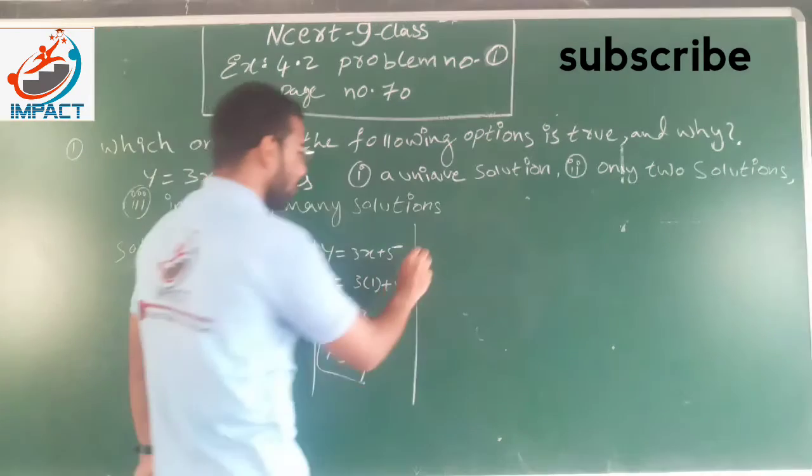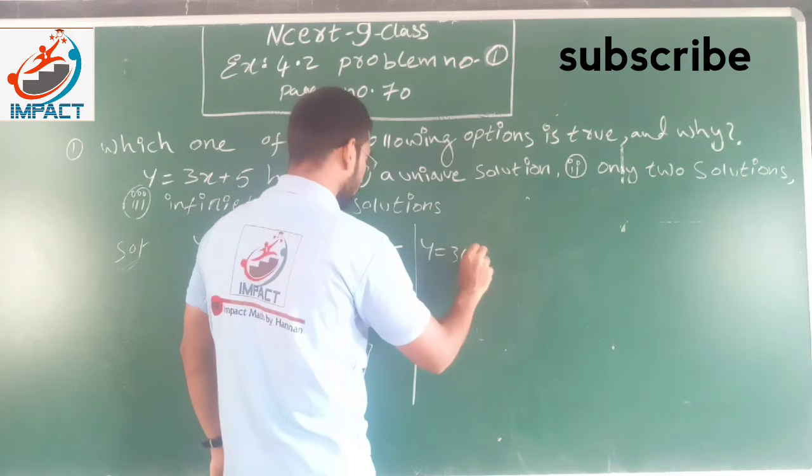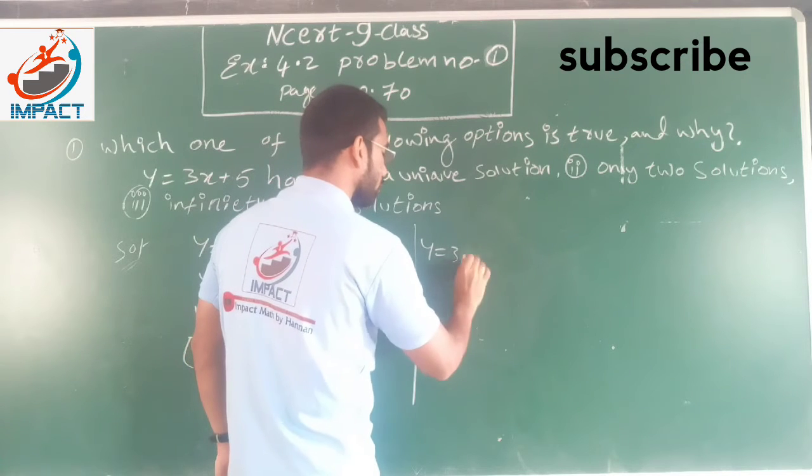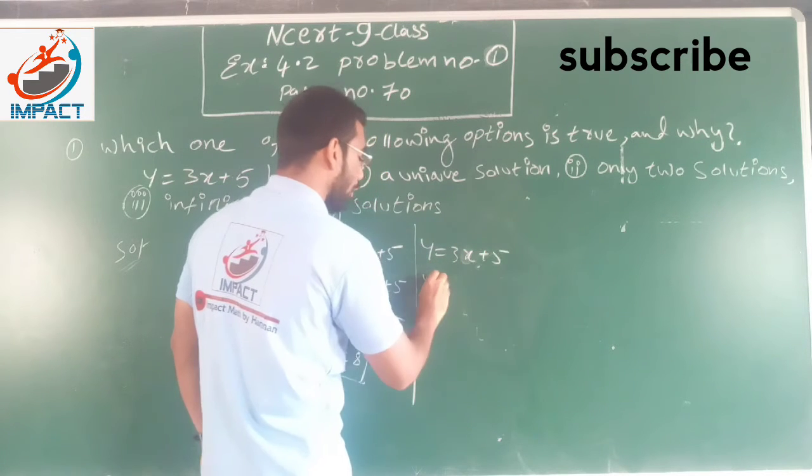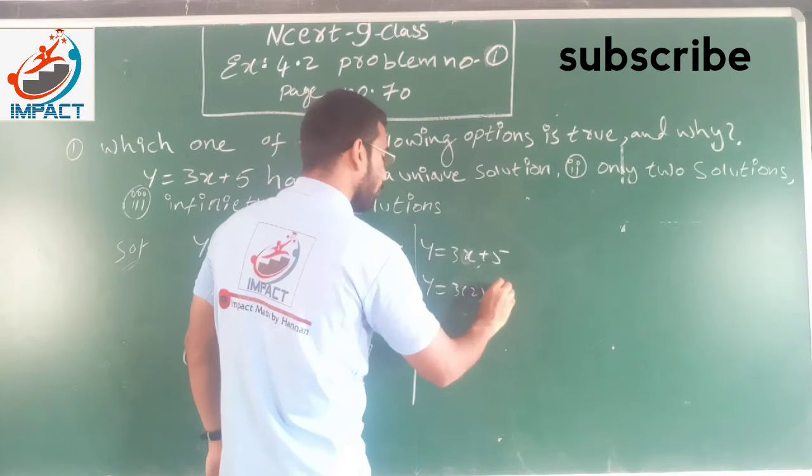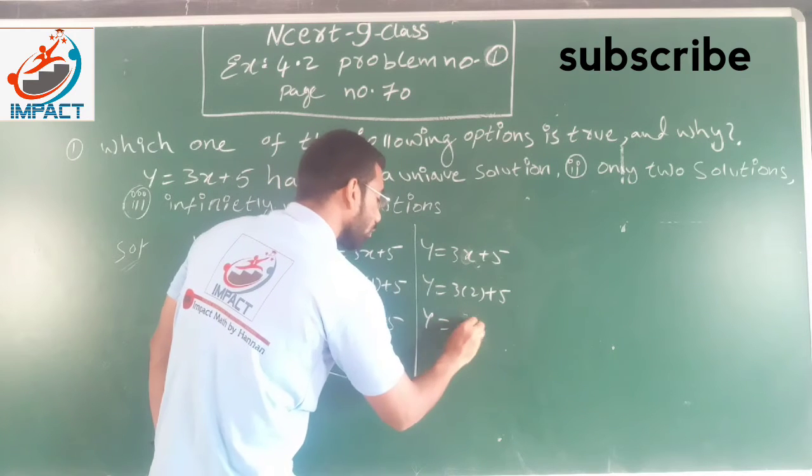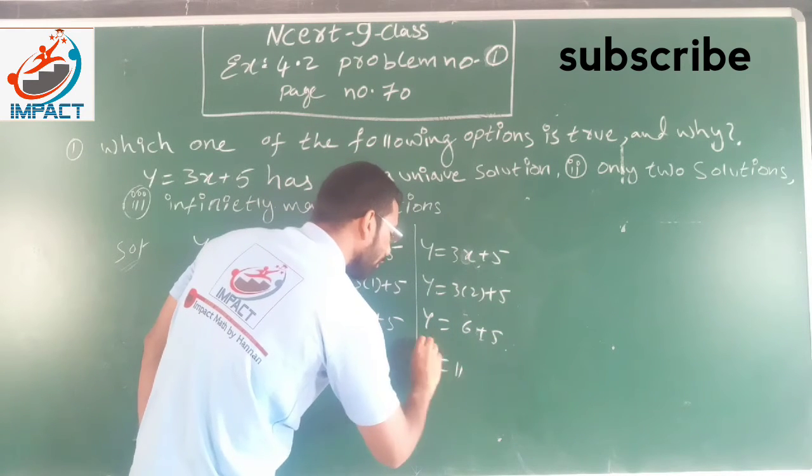Now we will go like this. y equals 3 into 2. y equals 3x plus 5. So y equals 3 into 2 plus 5. y equals 6 plus 5. y equals 11.